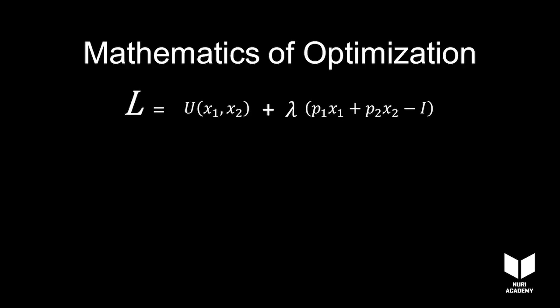Take the Lagrangian that was set up in the last episode and differentiate it with respect to three variables: x1, x2, and lambda, and set the resulting three derivatives equal to zero.